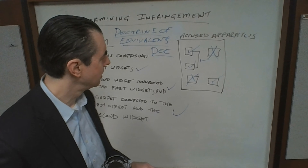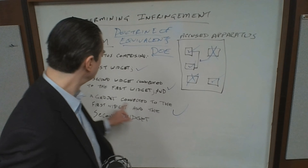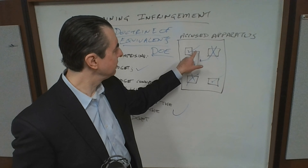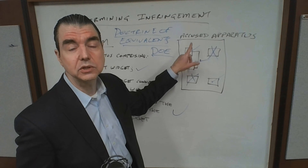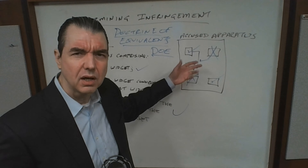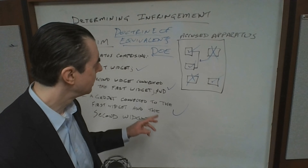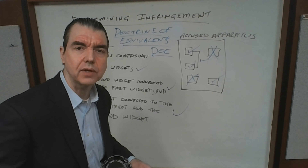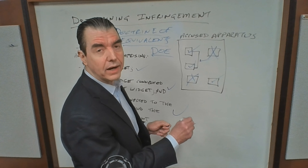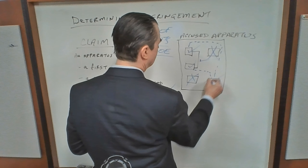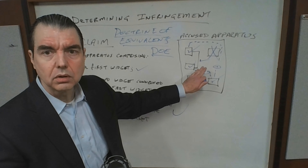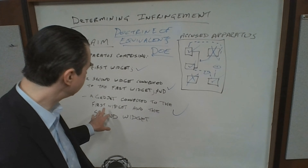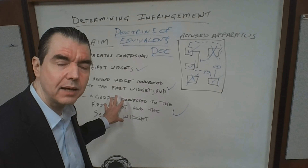Let's go back to the accused apparatus and look at the gadget, which is present, and see if it can meet a doctrine of equivalence analysis. The gadget is not connected — at least from appearances — to the first widget and the second widget. That connection in our claim is a physical connection, like a communication bus, serial connection, or circuit connection. The gadget doesn't have this type of circuit connection. However, when we analyze the accused apparatus further, we find that it does have a wireless connection — radio frequency connections — to the first widget and the second widget.